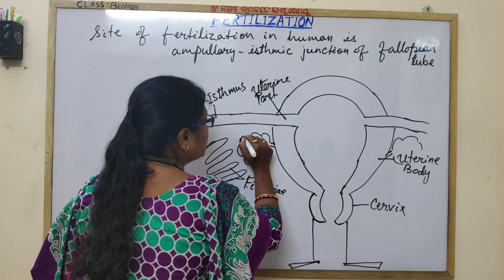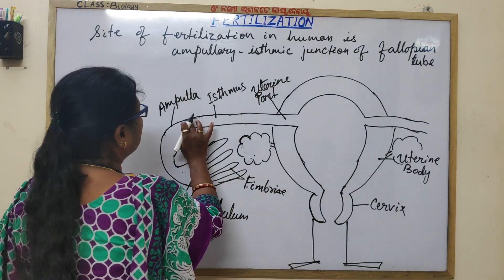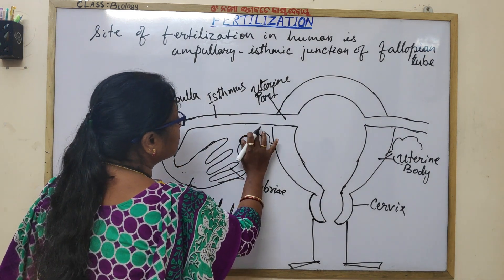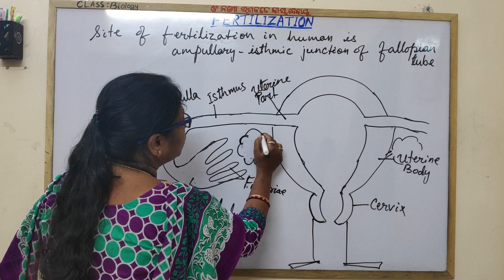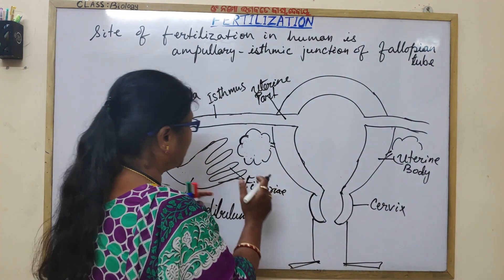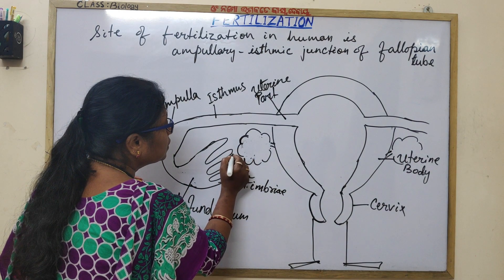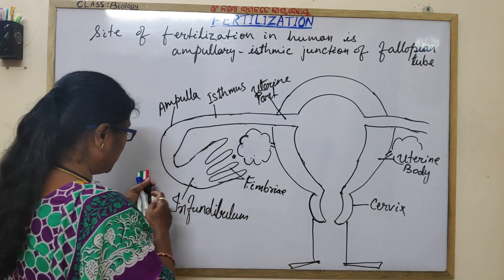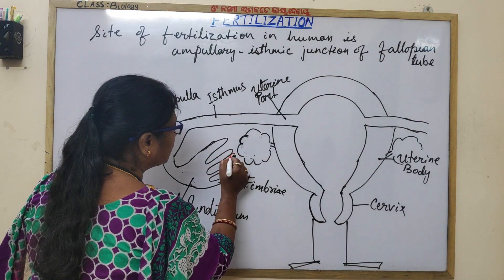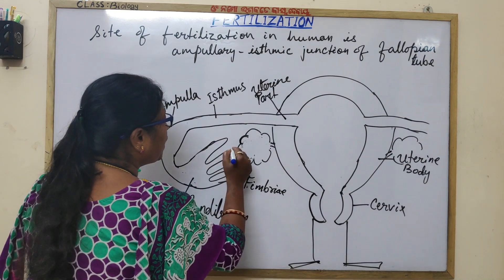Now let us discuss the events. Where does fertilization occur? When the egg is released during ovulation from one of the ovaries, the ovum is surrounded by the zona pellucida and the corona radiata.